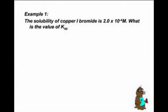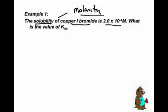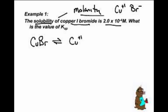We're going to use some of these uber tiny numbers now. When we talk about solubility, we usually measure it in molarity — moles per liter. So we want to find the solubility of copper(I) bromide. We write the formula: Cu⁺ and Br⁻. If we know the solubility, we can calculate the Ksp.